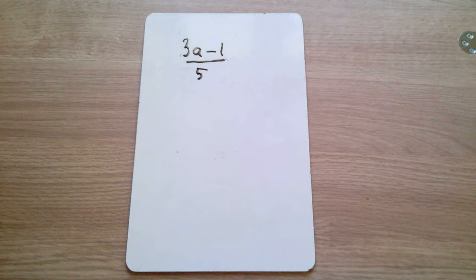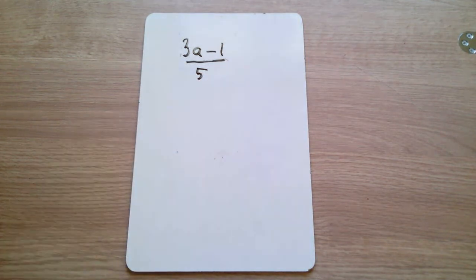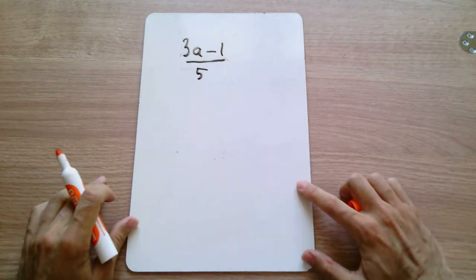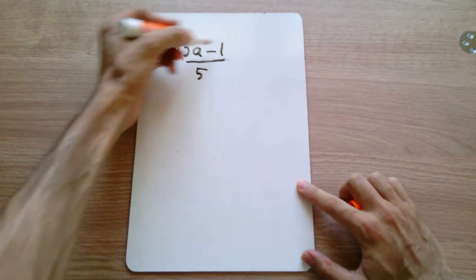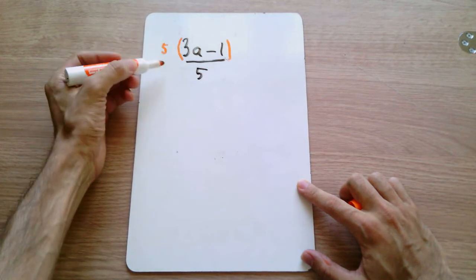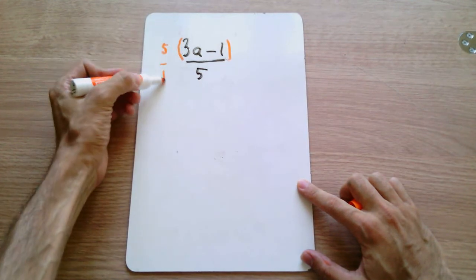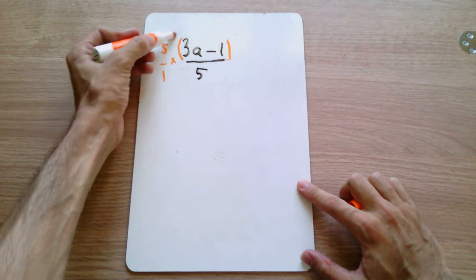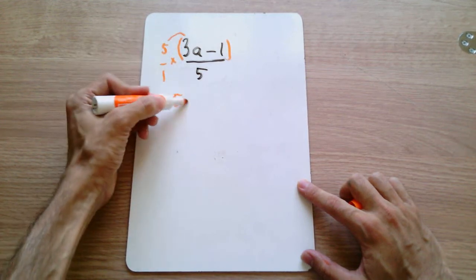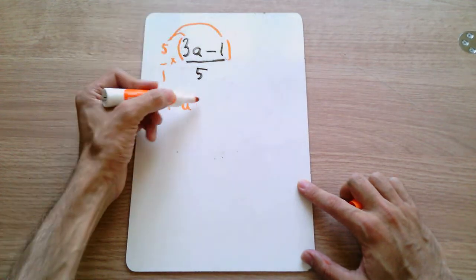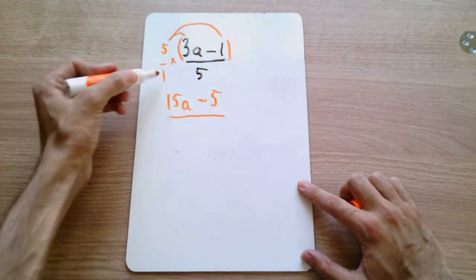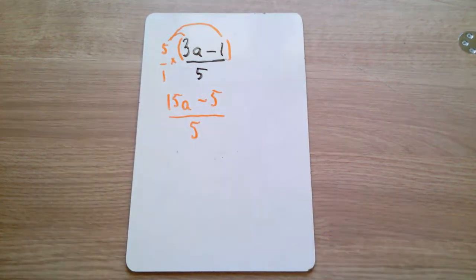Before we start, I'm going to bring you to this expression over here, which is 3a minus 1 all divided by 5. I'm going to show you what happens when you multiply through by the denominator of a fraction. So if I multiply this fraction by 5 — multiplying by 5 is the same as multiplying by 5 over 1 — the 5 multiplies 3a giving us 15a, and the 5 multiplies through by minus 1 giving us minus 5. On the bottom, 1 times 5 is simply 5.